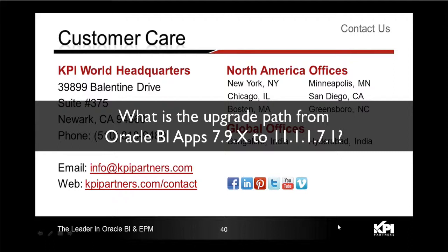The BI Applications 7.9.6.4 is built on Informatica. The roadmap for the next release of BI Applications on Informatica is 12 months and beyond. When that application arrives, there is a migration path on Informatica. Around the same timeline, the applications upgrade from the Informatica-based 7.9.6 series to the 11G series will give the customer an option to upgrade either to the Informatica version or to the ODI version, with some migration utilities provided.